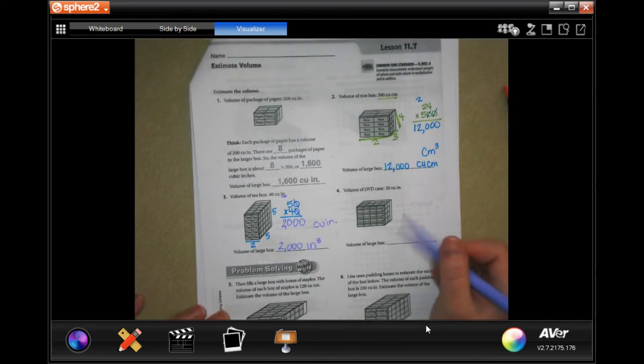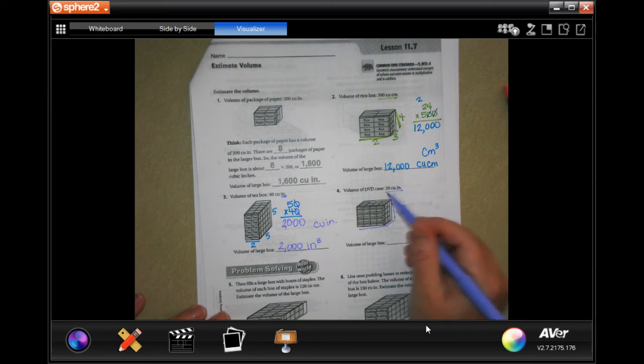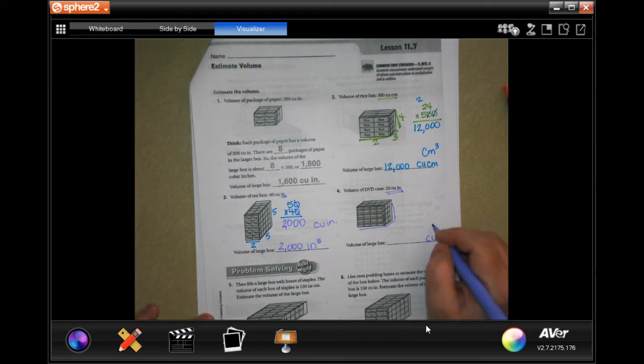I want you guys to go ahead and do number four. Remember, find the volume of this, then multiply it by 20 and make sure that your label is there, either in cubic inches or in inches cubed.